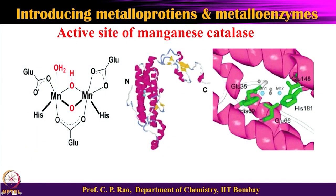Manganese catalase has a slightly different active center than manganese superoxide dismutase. Manganese superoxide dismutase has a mononuclear manganese center, while manganese catalase has a dinuclear or dimanganese center. In the structure shown, one subunit contains two manganese ions — labeled Mn1 and Mn2 — surrounded by directly bonded histidine and glutamic acid residues, with a bridging glutamate connecting the two manganese ions. It is a perfect bridged dinuclear complex, with a bridging OH also present during reactivity.